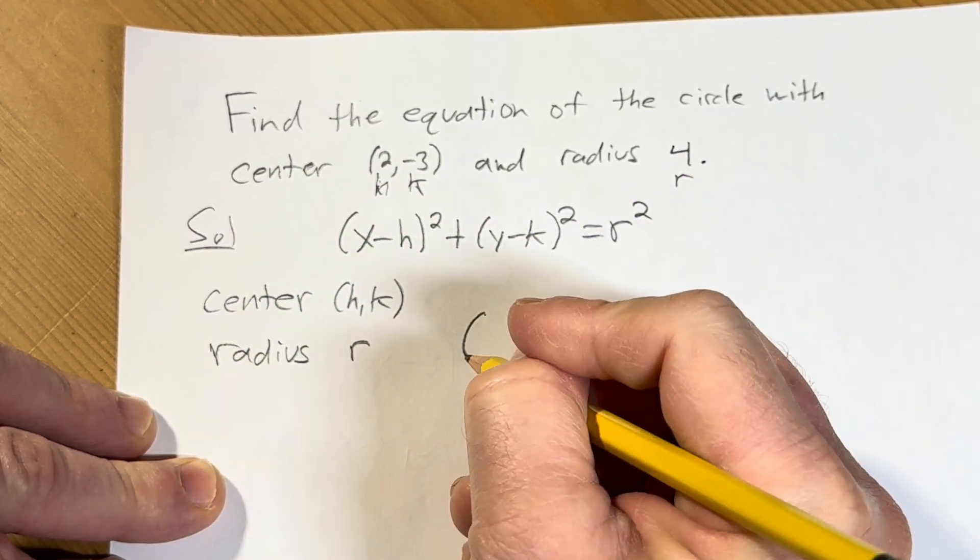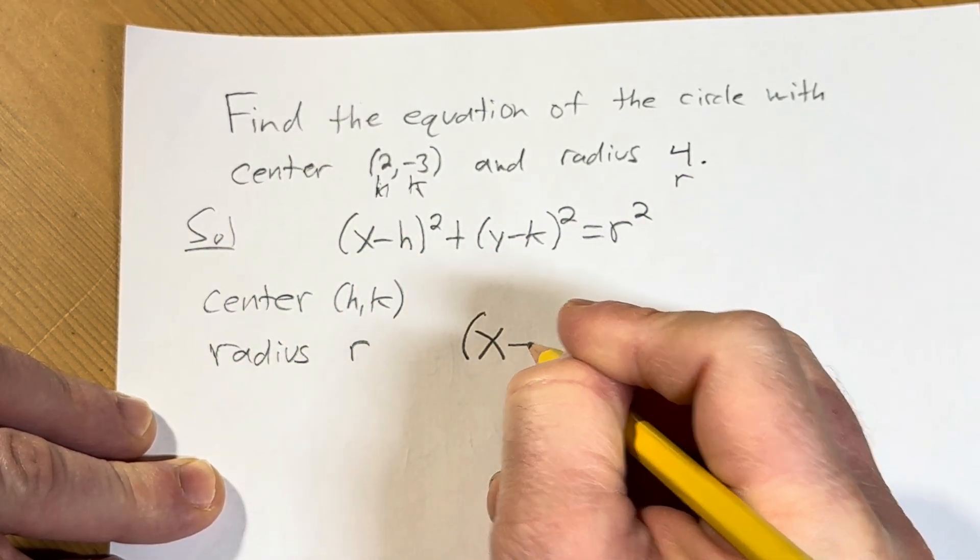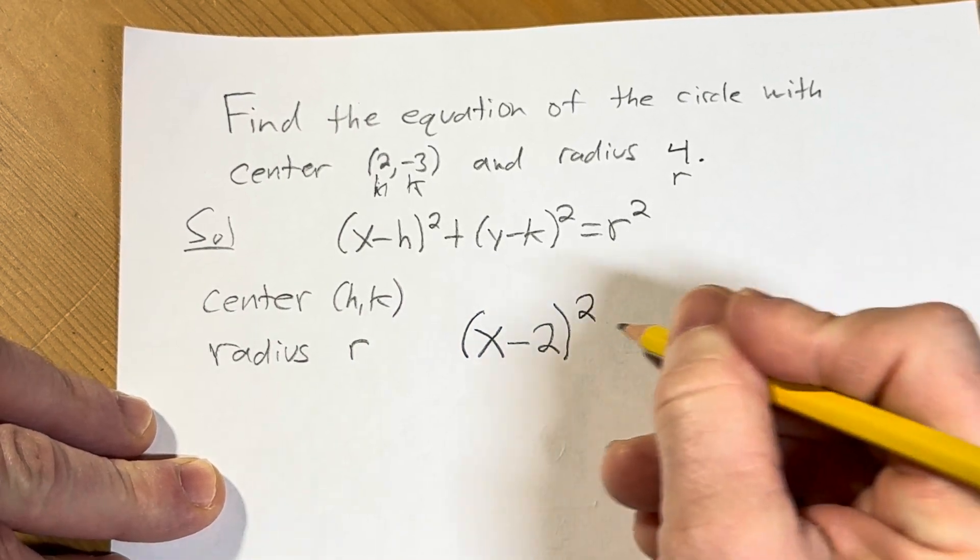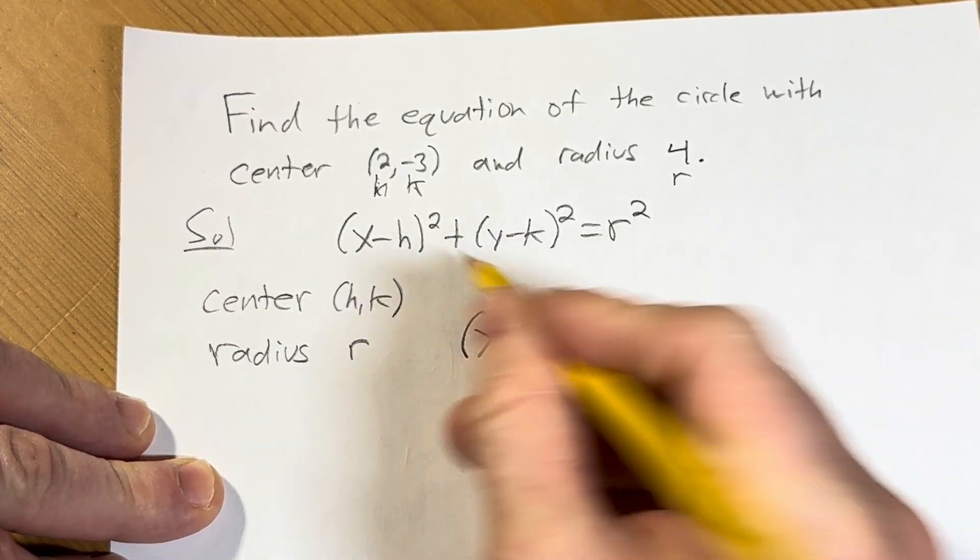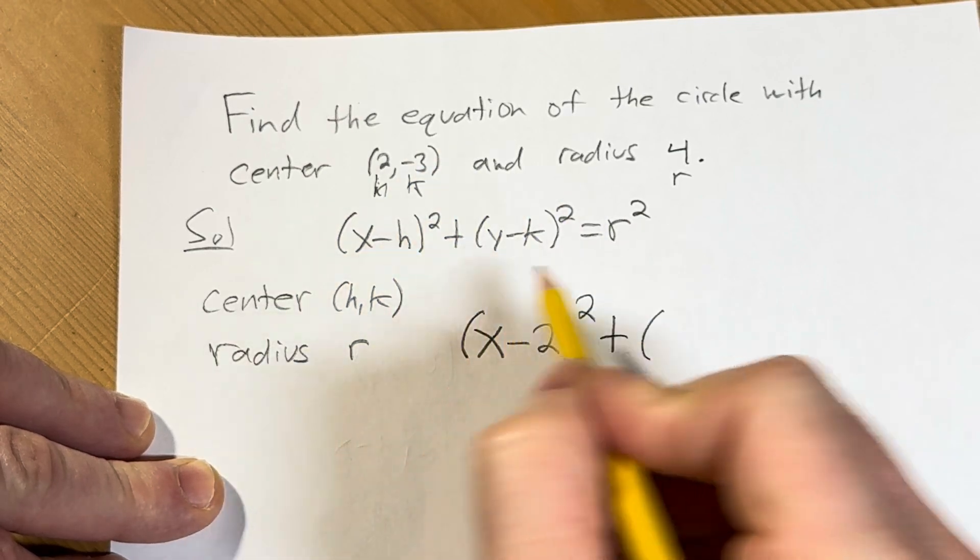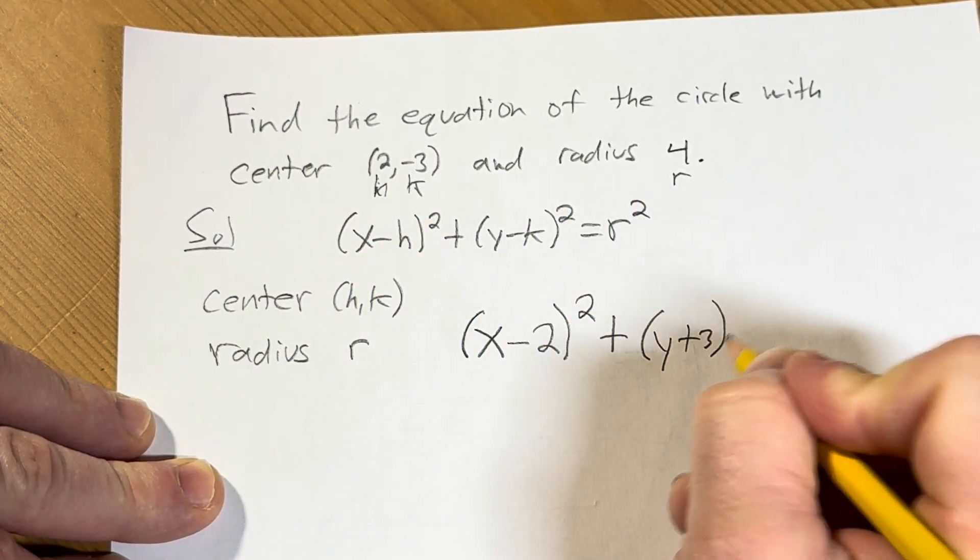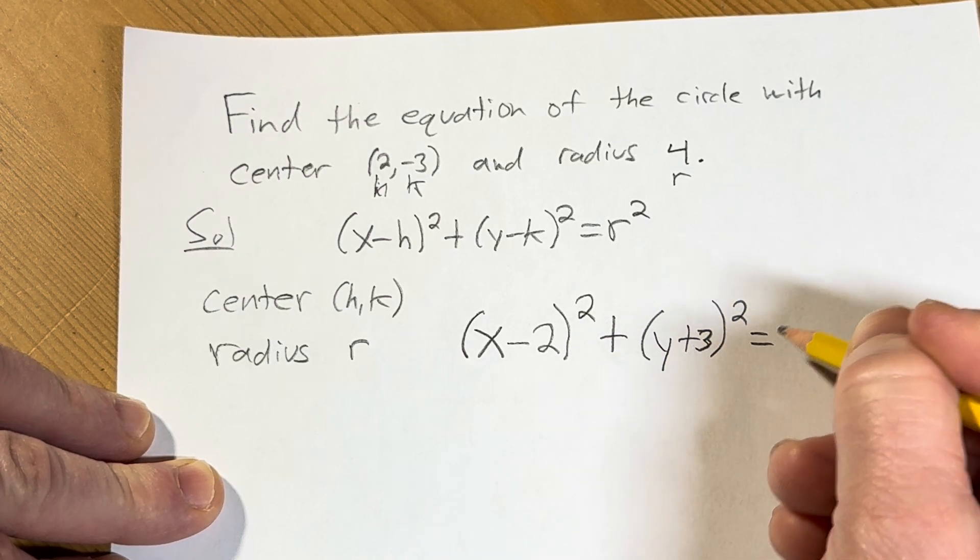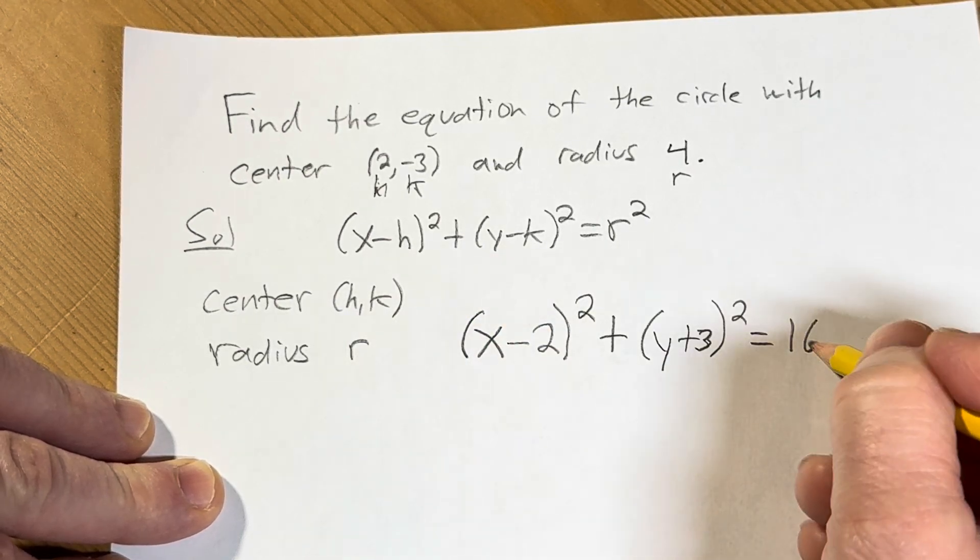So putting it all together we have (x - 2) and that quantity is being squared plus we have y minus negative 3, but minus and minus becomes plus. So then equals r squared but r is 4, so this is going to be 16.